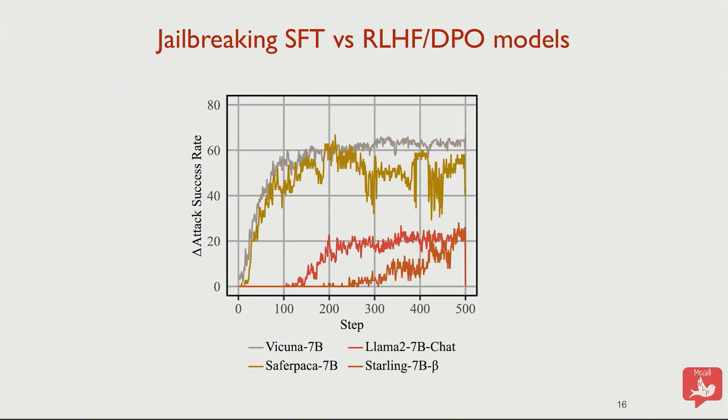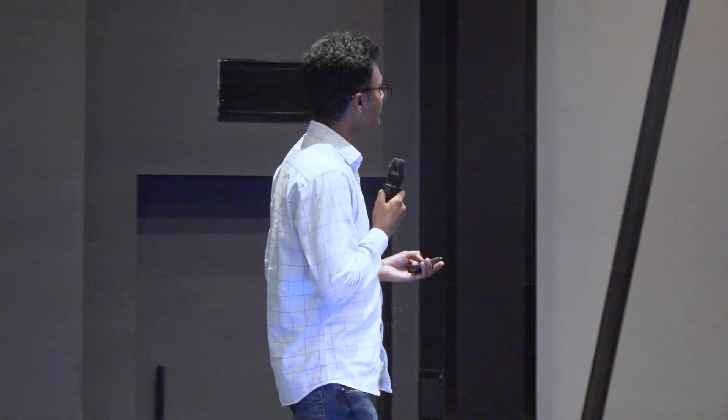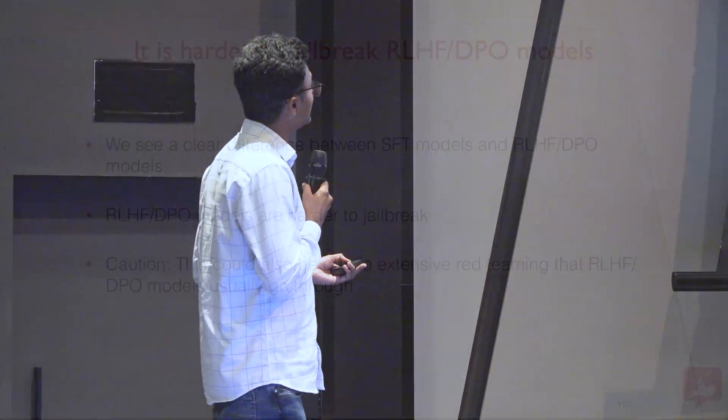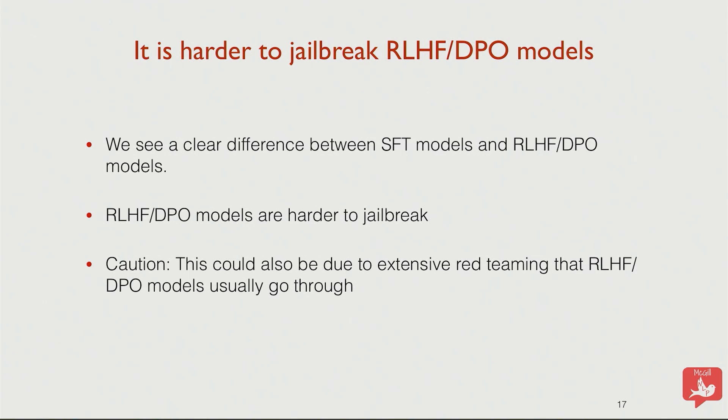These models not only go through RLHF and DPO, but they also go through extensive red teaming, and because of that it's very hard to find universal triggers that could transfer to all prompts or across different models. We see a clear difference between SFT and DPO/RLHF models, but it's not entirely clear whether this is due to the training method or also the red teaming.